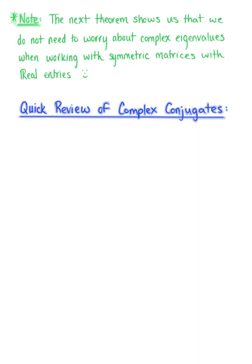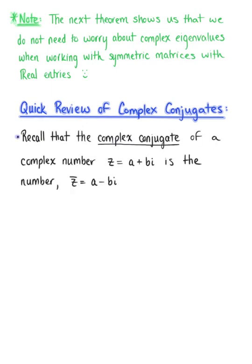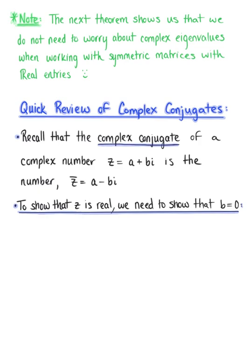So to help us prepare for this theorem, let's do a quick review of complex conjugates. Recall that the complex conjugate of a complex number z, equal to a plus bi, is the number z-bar equal to a minus bi. Now to show that z is real, we need to show that b is equal to zero.